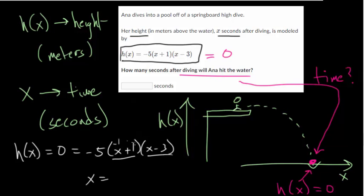If you plug in -1 here, this would be 0, and 0 times anything is 0, so we don't have to go any further. So x is -1, and if you plug in 3 here, 3 - 3 is 0, and so 0 times whatever would still give you 0.